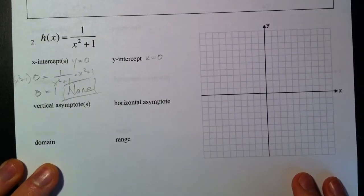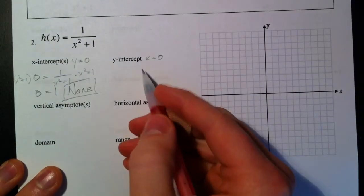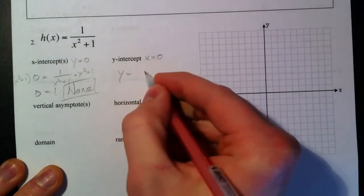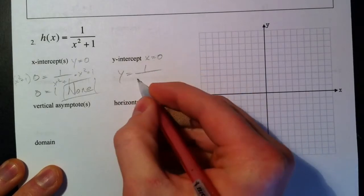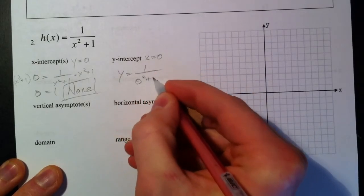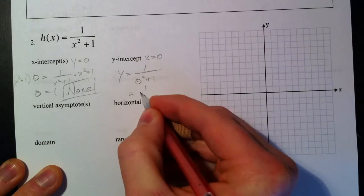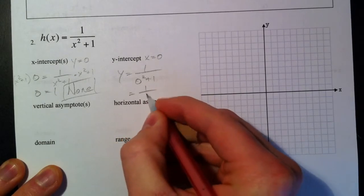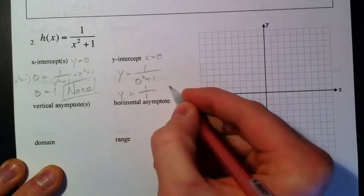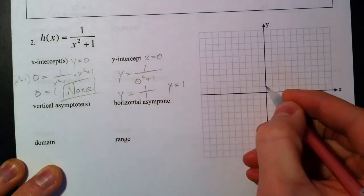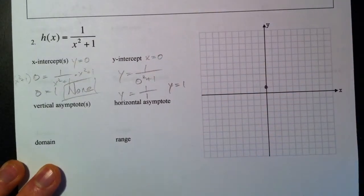Y-intercept: y equals 1 divided by when x equals 0, 0 squared plus 1. 1 divided by 0 squared plus 1 is 1 over 1, so y equals 1. So that's our y-intercept.